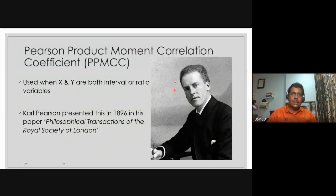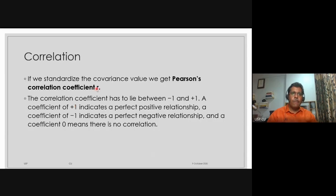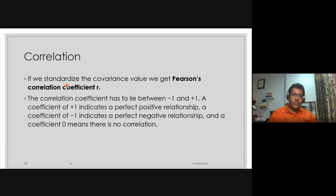In 1896, Karl Pearson proposed this correlation coefficient in a paper called Philosophical Transactions of the Royal Society of London — about 104 years ago. If we standardize the covariance by dividing it with the standard deviation, we get the correlation coefficient. If the correlation coefficient is plus one, it is perfectly positively correlated. If it is minus one, it is perfectly negatively correlated. The correlation coefficient is always between plus one and minus one. If the coefficient is zero, there is no correlation.